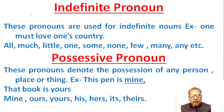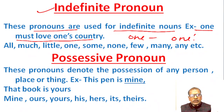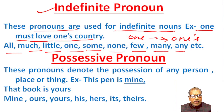Indefinite pronoun. These pronouns are used for indefinite nouns. Example: 'One must love one's country.' In this sentence, 'one' is subject in nominative case and 'one's' is possessive case. Always with 'one' in possessive case, 'one's' is used — we cannot use 'his' here. Examples of indefinite pronouns: all, much, little, one, some, none, few, many, any, etc.